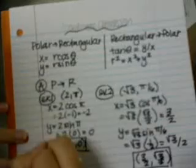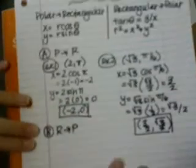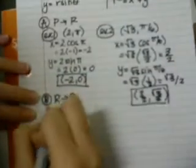Let's move on to part B, which is to go from rectangular to polar coordinates and look at some examples of that type.